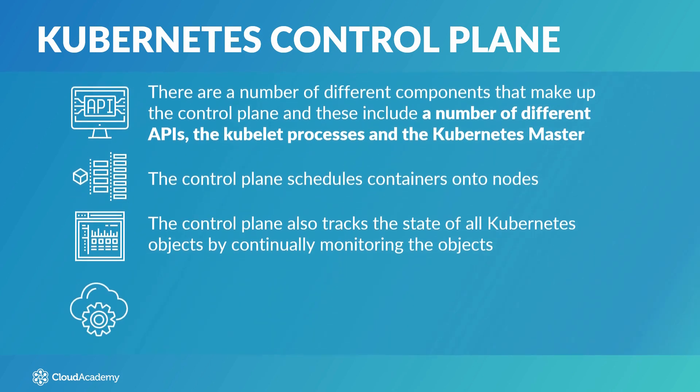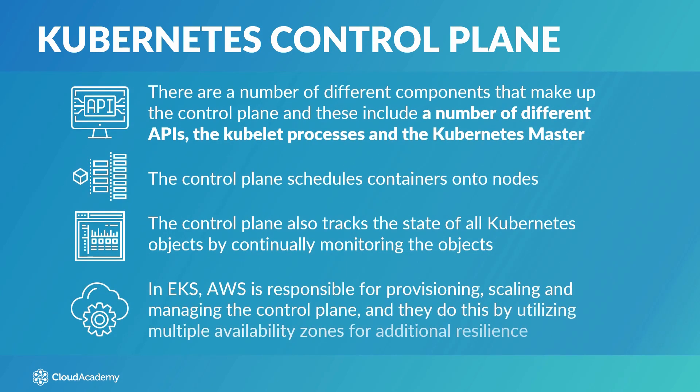In EKS, AWS is responsible for provisioning, scaling and managing the control plane, and they do this by utilising multiple availability zones for additional resilience.